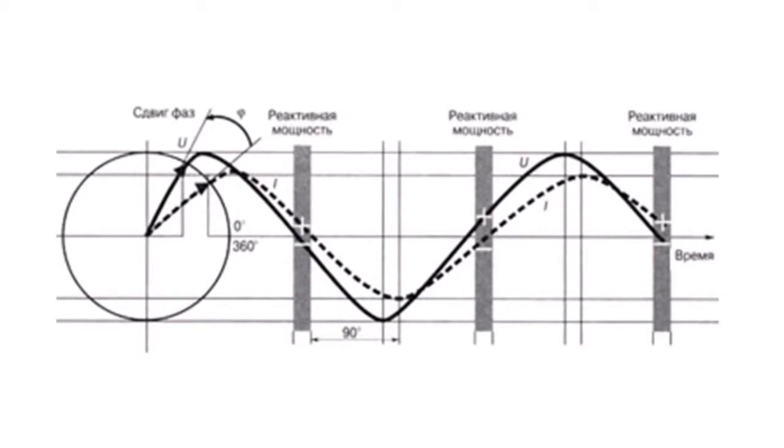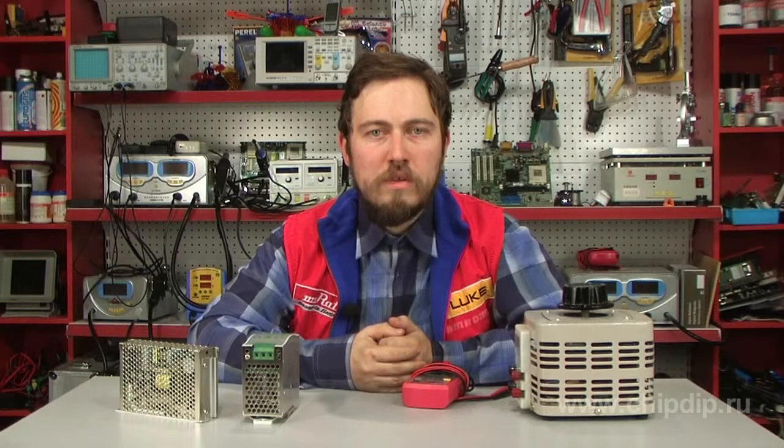This power is called reactive power. Apparent power is the combination of active power that performs useful work and reactive power that is used to create magnetic fields, causing extra load on mains power.